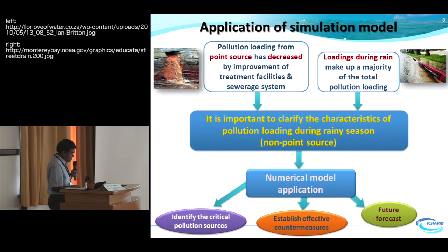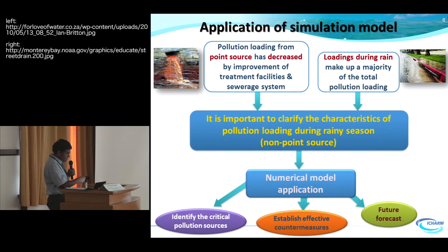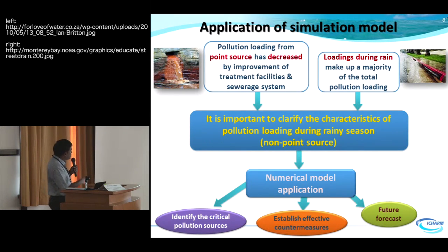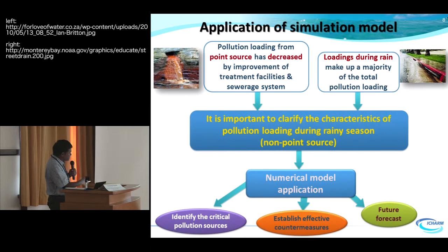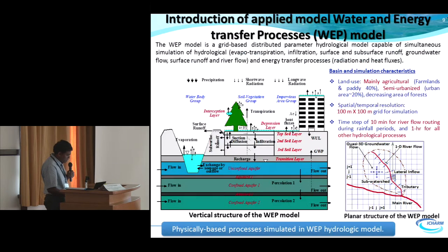Regarding the simulation model application: pollution loadings from point sources have decreased through improvement of treatment facilities, sewage systems, and regulations. Loadings during the rain season now make up the majority of total pollution loadings. It is therefore important to clarify the characteristics of pollution loadings during the rain season — mainly from non-point sources — to identify critical pollution sources, establish effective countermeasures, and enable future forecasting.